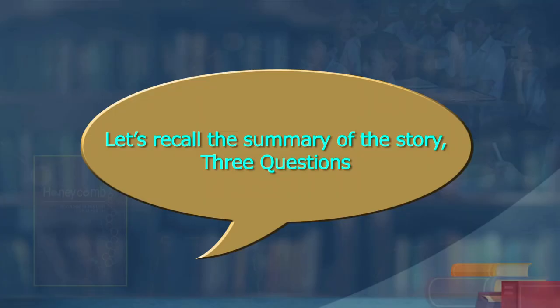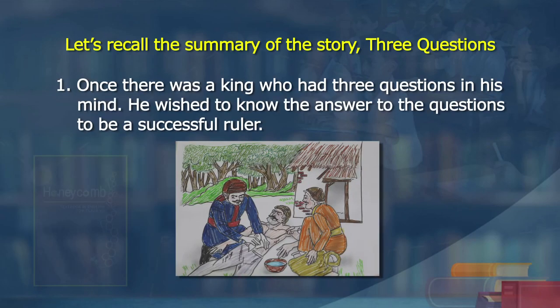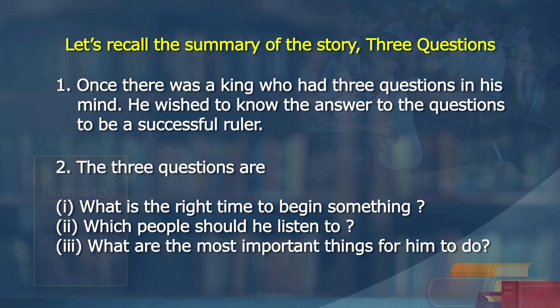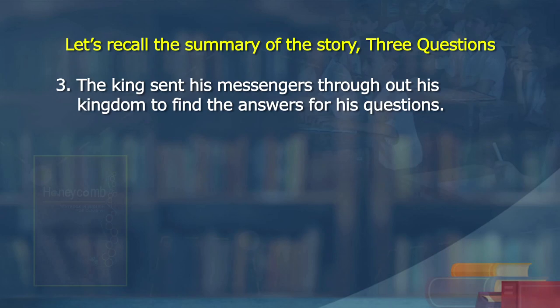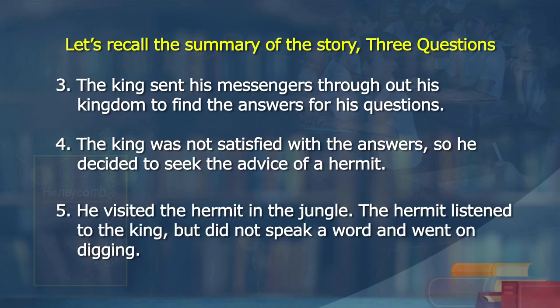Here are the summary points. Once there was a king who had three questions in his mind. He wished to know the answers to be a successful ruler. The three questions are: what is the right time to begin something? Which people should he listen to? What are the most important things for him to do? The king sent his messengers throughout his kingdom to find the answers for his questions. The king was not satisfied with the answers — he asked many people and no one was able to give a meaningful answer. So he decided to seek the advice of a hermit. He visited the hermit in the jungle. The hermit listened to the king but did not speak a word and went on digging.